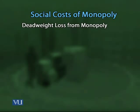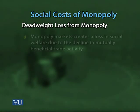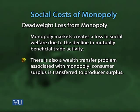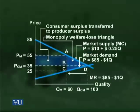To refresh your memory, let's have a look at the screen. The social costs of monopoly include two sources: first, a monopoly market creates a loss in social welfare due to the decline in mutually beneficial trade activity; second, there is a wealth transfer problem in which consumer surplus is transferred to producer surplus. We have called this the deadweight loss from monopoly. As shown in the diagram from our monopoly lectures, the dark shaded triangular area represents the loss to society from the monopoly.